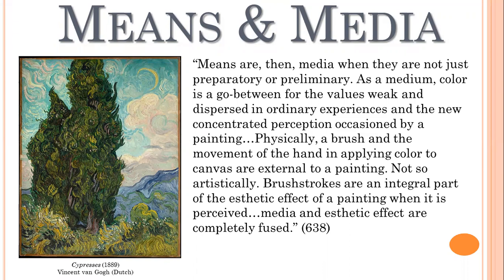We can move on to the next couple chapters — we're actually going to skip some. We're only going to cover two more chapters from this book, so we're skipping Chapters 10 and 11. Chapter 10 is The Varied Substance of the Arts. This chapter is The Common Substance — spoiler alert, all arts use media of some sort. That's what's common about art; they all use some kind of media. The Varied Substance of the Arts is a chapter where he focuses on the differences, how each art focuses on one particular aspect of experience, whether through sight, sound, or whatever. We're going to skip a lot of that; it's interesting, but it's not in our textbook for this class.